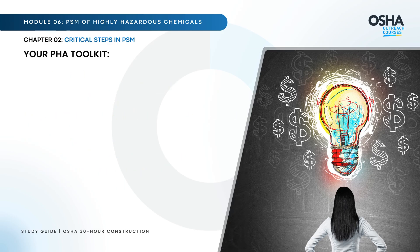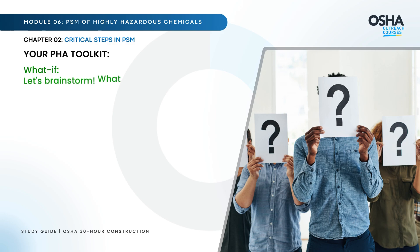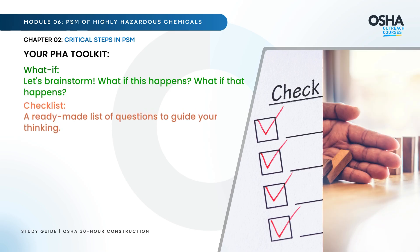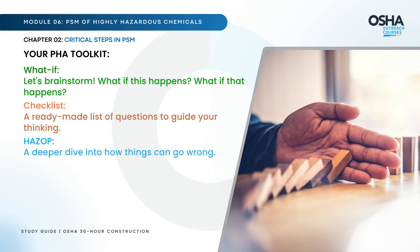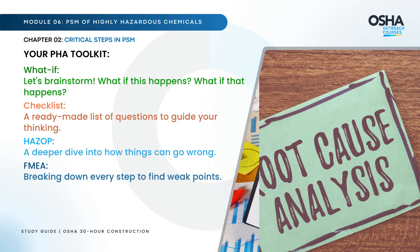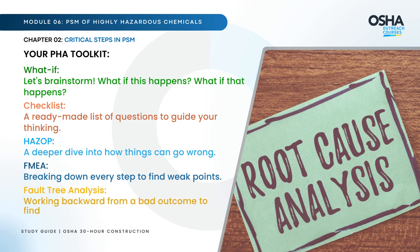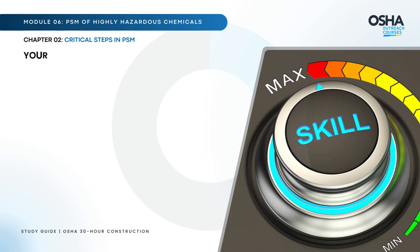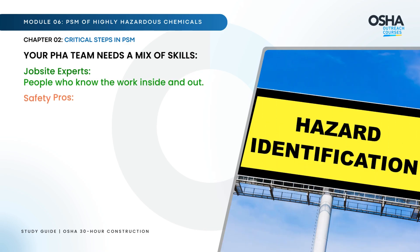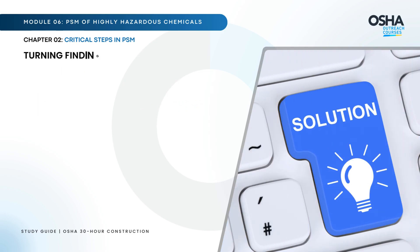Here is your PHA toolkit: 'What if?' — brainstorm scenarios like 'what if this happens, what if that happens.' Checklist — a pre-made list of questions to guide your thinking. HAZOP — a deeper dive into how things can go wrong. FMEA — breaking down every step to find weak points. Fault tree analysis — working backward from a bad outcome to find the cause. Your PHA team needs a mix of skills: job site experts who know the work inside and out, and safety professionals who know how to identify hazards.